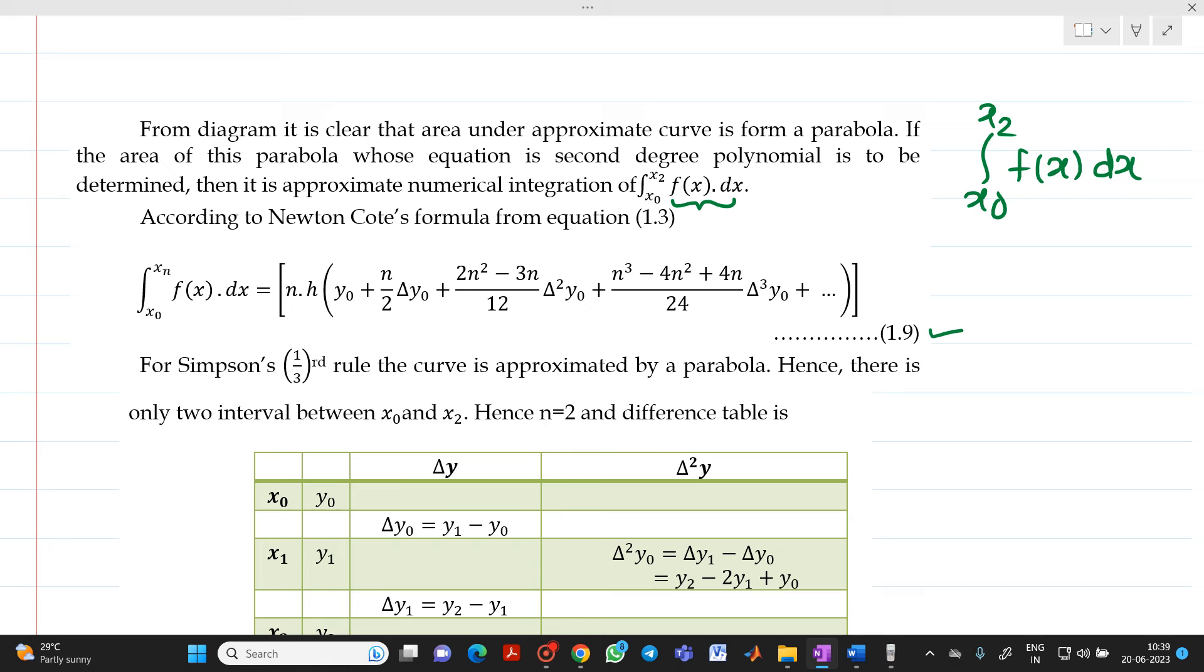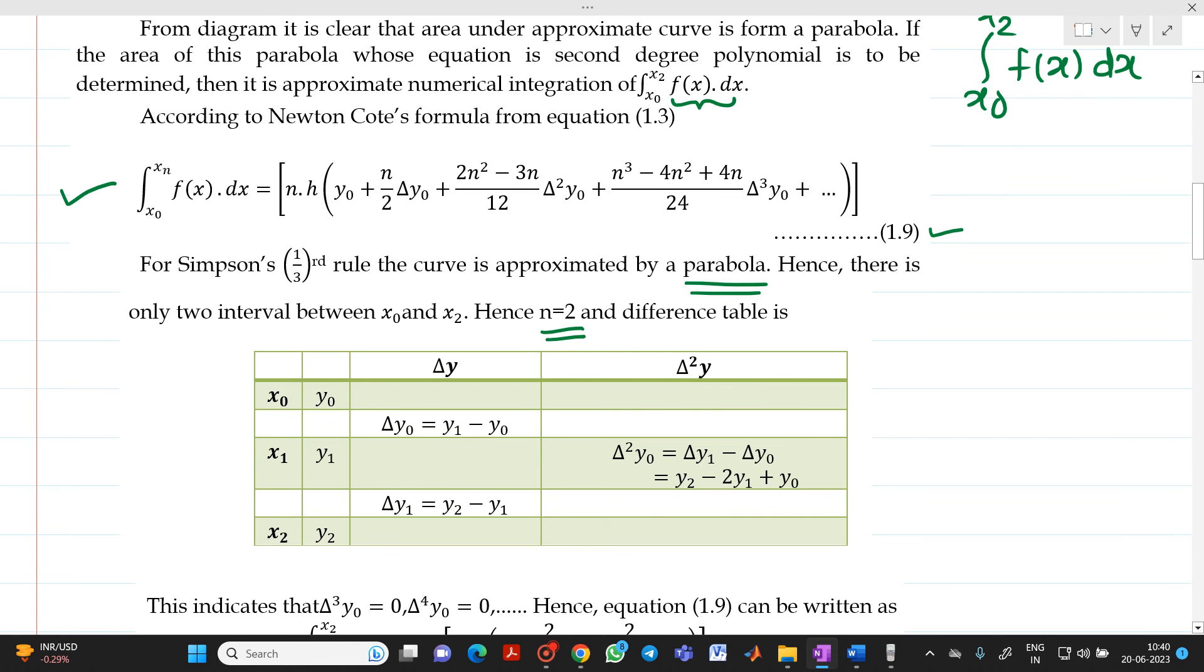Treat this as equation number 1.9. Integration x0 to xn, f(x) dx equal to nh into bracket y0 plus n/2 delta y0 plus (2n² - 3n)/12 del² y0 plus (n³ - 4n² + 4n)/24 del³ y0. Now, as we will get the approximated curve as a parabola, which is a second degree curve, we will put here n equal to 2 in this equation. That is, Newton's Cotes quadrature equation.